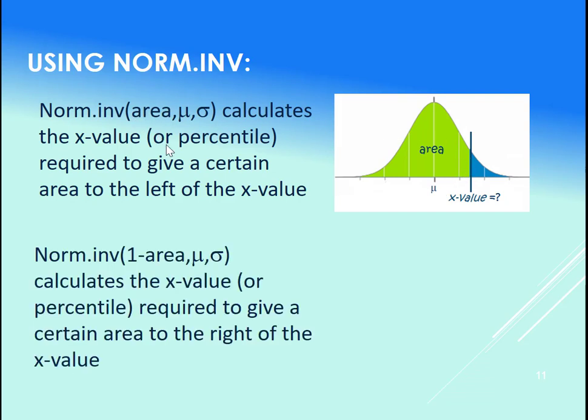If instead you want to work with the area to the right here, and you want the x value, then take 1 minus that area to then feed into Excel the area to the left, this blue area. So 1 minus this green area gives us this blue. That is what you plug into Excel's norm.inv call.